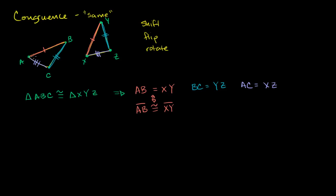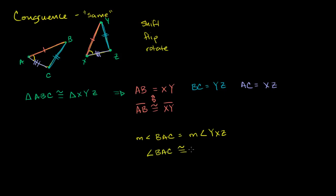For example, we know that this angle's measure is going to be the same as its corresponding angle's measure over here — between the orange side and the purple side. So the measure of angle BAC is equal to the measure of angle YXZ. We could also write that as: angle BAC is congruent to angle YXZ. And just like line segments, if one angle is congruent to another angle, it just means that their measures are equal. So those two corresponding angles have the same measure — they're congruent.